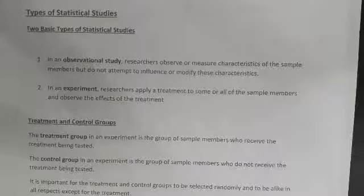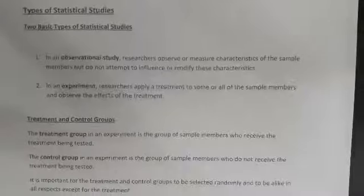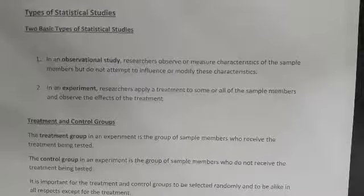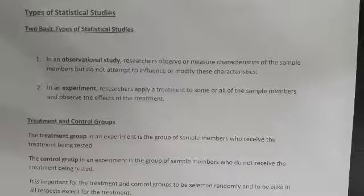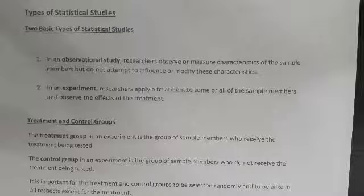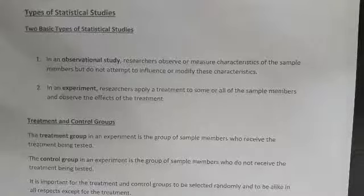In an observational study, researchers observe and measure characteristics of sample members but do not attempt to influence or modify them. In an experiment, researchers apply a treatment to some or all members and observe the effects. Experiments are generally better because we can rule out certain variables and compare results with or without them. However, it's not always ethical to conduct an experiment — for example, you wouldn't force people to smoke to study lung cancer.